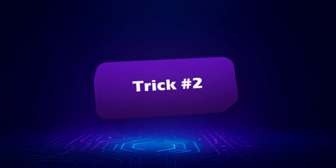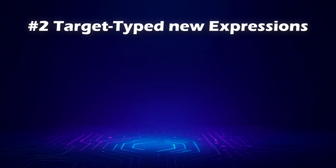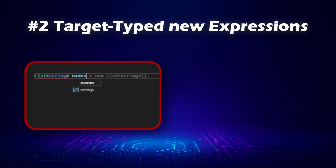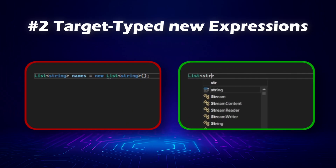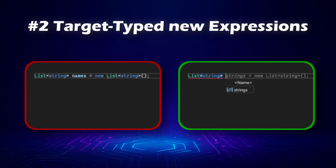Let's move on to trick number 2: target typed new expressions. It's a small change that makes object creation much cleaner. Here's the classic way to create a list — it works perfectly, but notice how you have to repeat the type `List<string>` on both sides; it's redundant. Now, here's the modern approach with a target typed new. That's much cleaner — the compiler already knows the type from the left-hand side, so you don't have to repeat it.